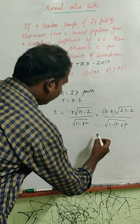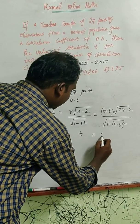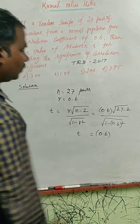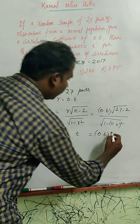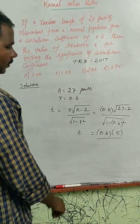Simplify we have t value. 0.6 into 27 minus 2, 25, root of 25 into 5. 0.6 square.